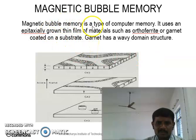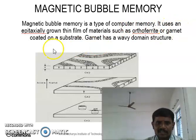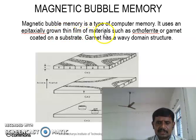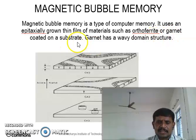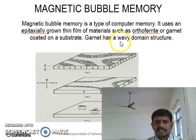The magnetic bubble memory is a type of computer memory. It is used on an epitaxially grown thin film of materials such as ferrites and garnets coated on a substrate. Garnet has a very distinct domain structure.